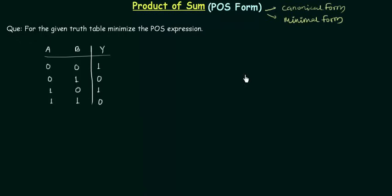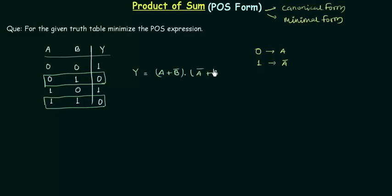So let's start with it. If you remember I told you in POS form if there is 0 the variable is written as a and if 1 is there the variable is written as a complement. The function y is written when it is low, when it is 0. There are two cases when the output is 0 and for the first case you can see a is 0 and b is 1. So I will write a or b complement. And for the last case I have a complement or b complement. So this is simply the canonical POS form or standard POS form.